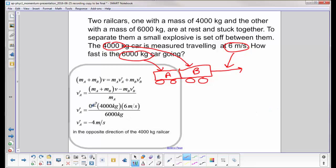The cars are at rest, so the first term is zero. Then I have minus 4,000 kilograms times 6 meters per second. That's car B. And I get an answer of car A will be moving at negative 4 meters per second.